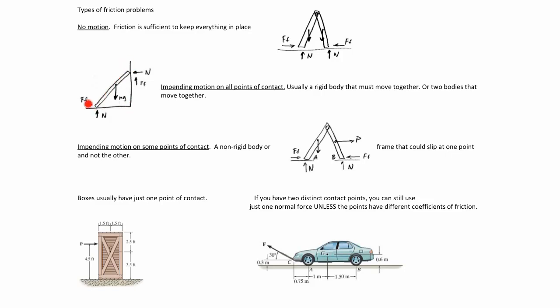The second type is where all surfaces are slipping or have impending slip — for example, a board or ladder leaning against a wall where both surfaces would move. That means all surfaces have maximum friction equal to mu times normal; it's usually a rigid body problem. The third category is impending motion at only some points of contact — not all of them. For example, the same A-frame might slip at one foot but not the other.